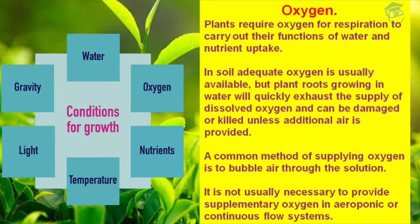Oxygen is the second most crucial factor for plant growth. Plants require oxygen for respiration to carry out their functions of water and nutrient uptake. In soil, adequate oxygen is usually available, but plant roots growing in water will quickly exhaust the supply of dissolved oxygen and can be damaged or killed unless additional air is provided.